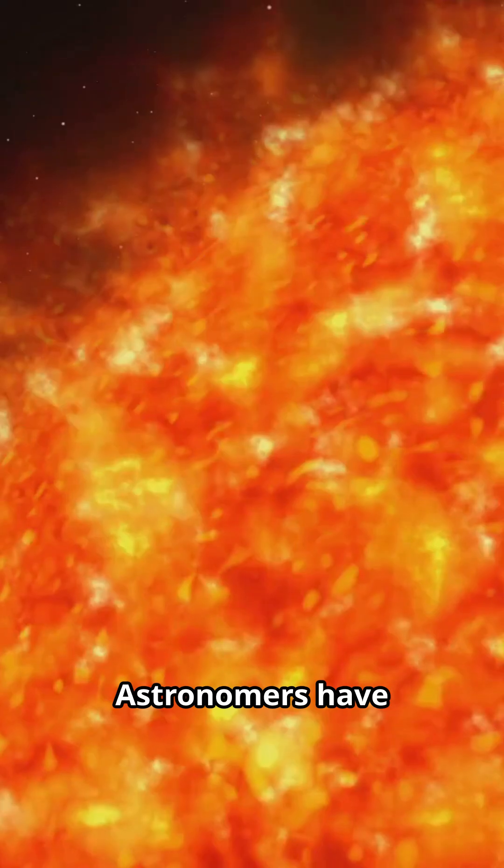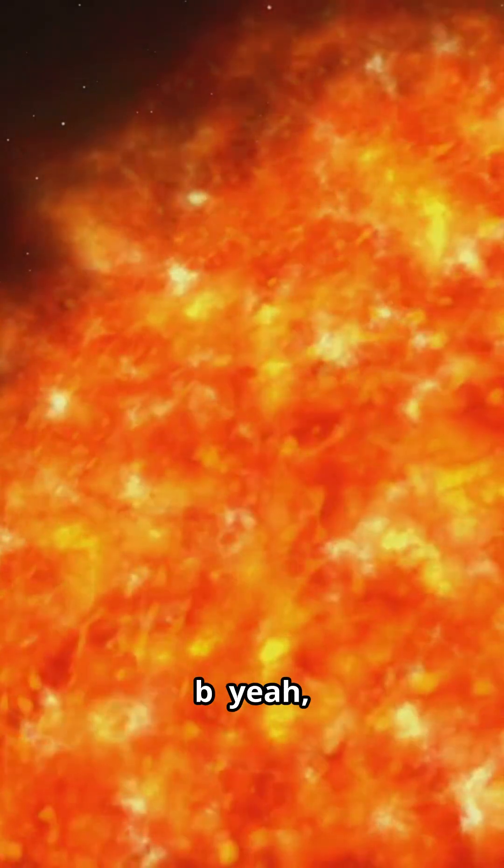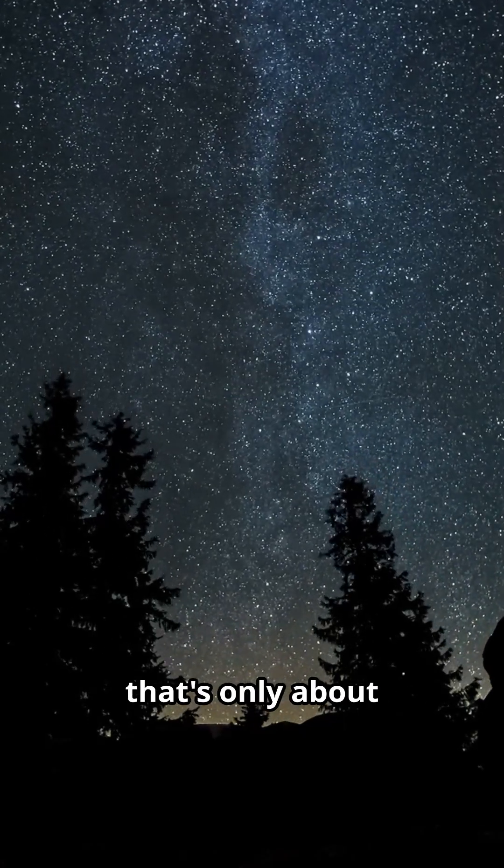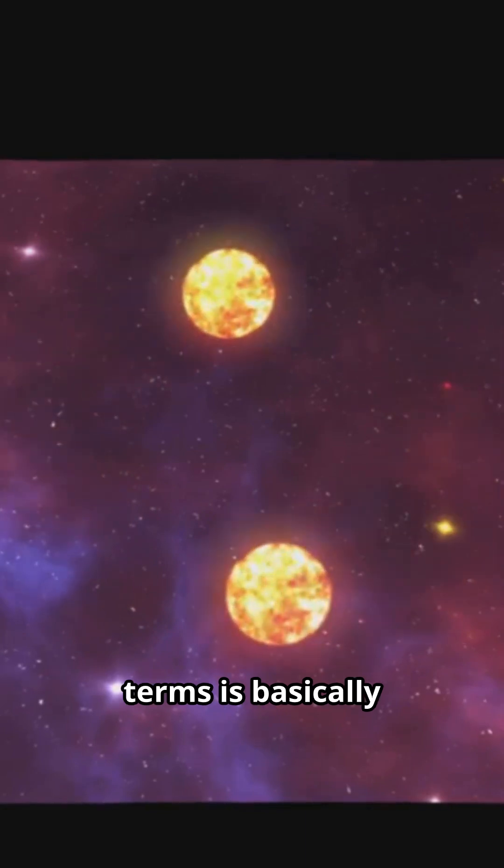Okay, picture this. Astronomers have spotted a planet called TIC 365102760b. Yeah, that's a mouthful, but stick with me. This planet is orbiting a star that's only about 1,800 light years away, which in cosmic terms is basically our neighbor.